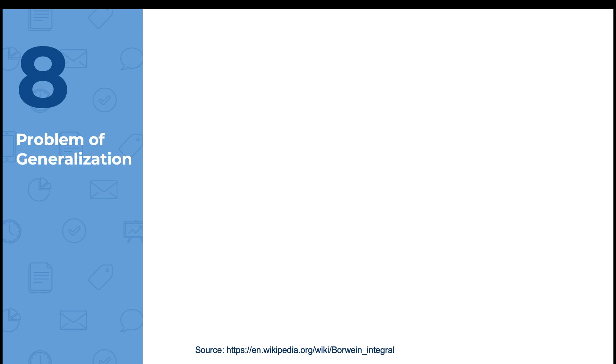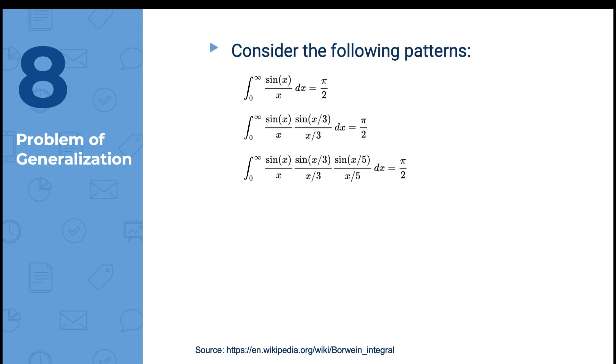Let's take a look at another example. These things all look similar. If I put sine x over an odd number and then divide by the same thing in the middle of the formula, it seems that until 13, I can always get the answer pi over 2.